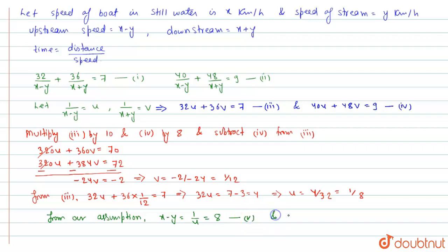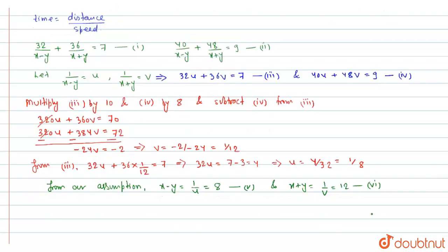Now to solve this we will add equation 5 and 6, that will give x minus y plus x plus y is equal to 8 plus 12. Now the minus y plus y gets cancelled.